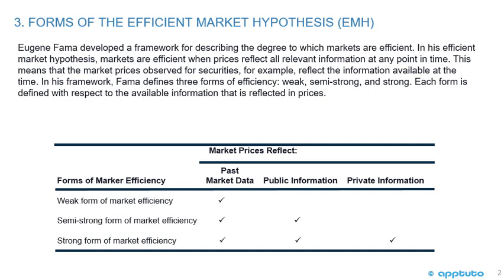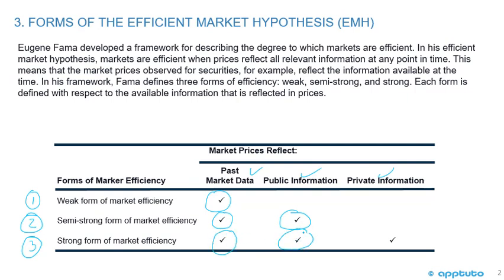Here we have a table. On the rows we have the forms of market efficiency: one is the weak form, two is the semi-strong form, and three is the strong form. The columns represent what market prices reflect: past market data, public information, and private information. The weak form reflects past market data; the semi-strong reflects past market data and public information.